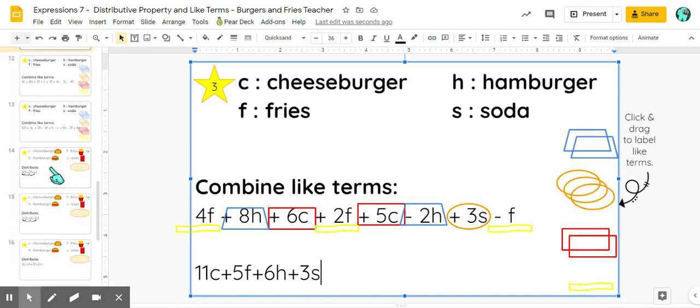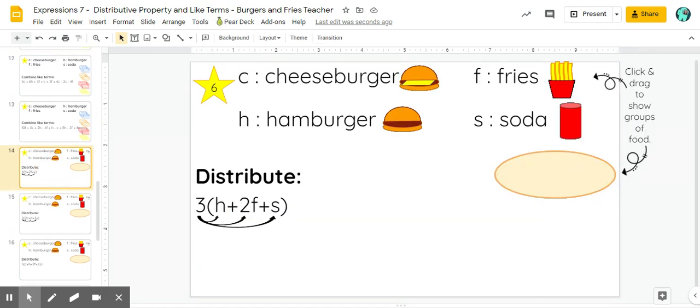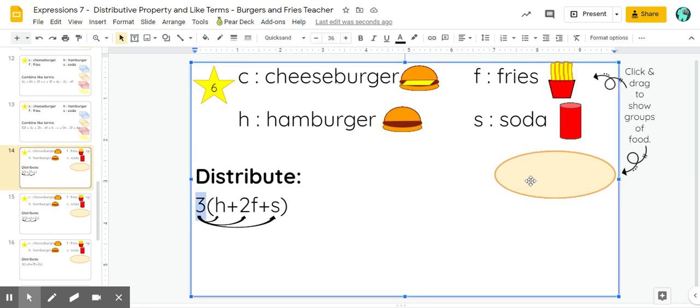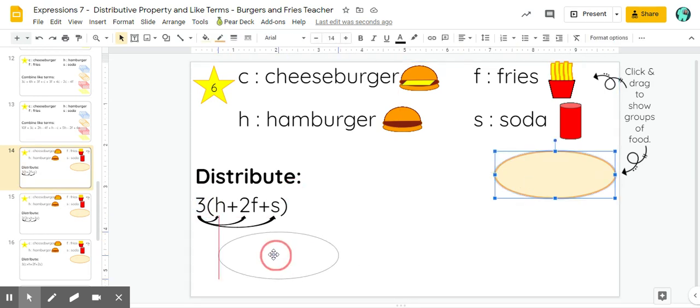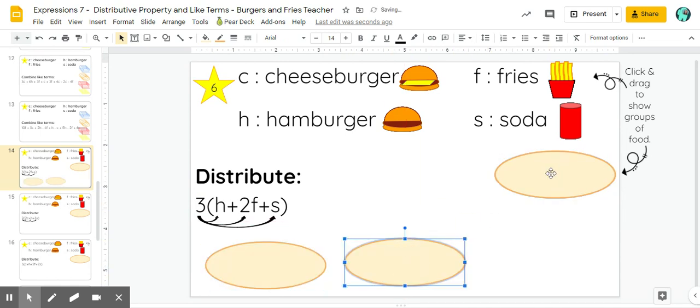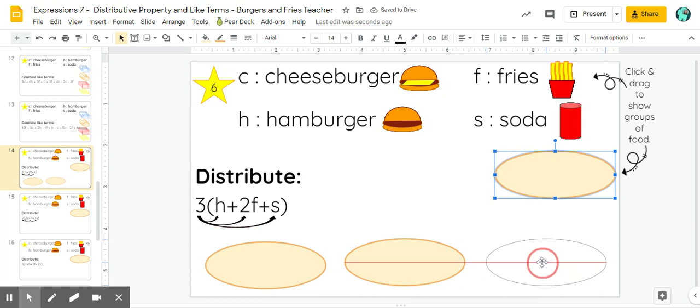Then some of them we have to practice the distributive property. The number in front represents how many tables we have. So we're going to have three tables. And everyone at these tables is getting the same food. It's kind of like there's a party.